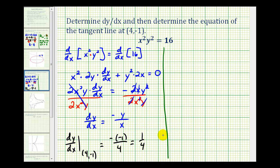So now we have all the information we need to determine the equation of the tangent line. We have the slope and we have the point of tangency. So using point-slope form of a line, x1 is equal to 4 and y1 is equal to negative 1. So we'll have y minus negative 1 equals one-fourth times x minus 4. Now we'll go ahead and solve this for y: y plus 1 equals one-fourth x minus 1. Subtract 1 on both sides. We have y equals one-fourth x minus 2 for the equation of our tangent line.